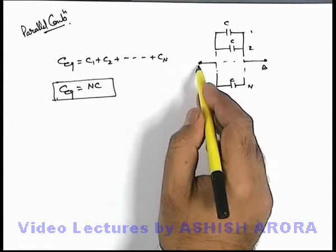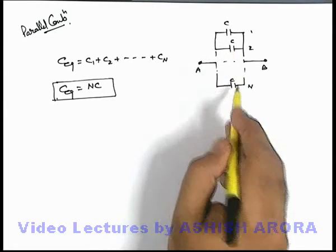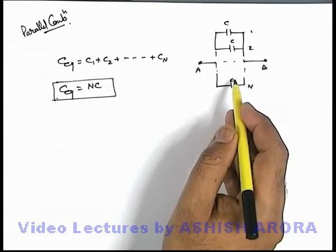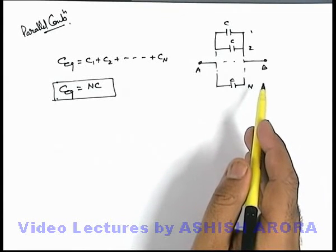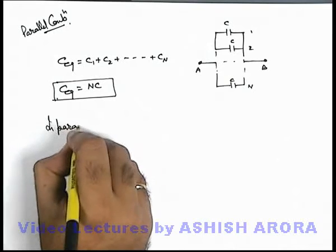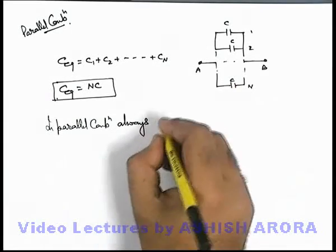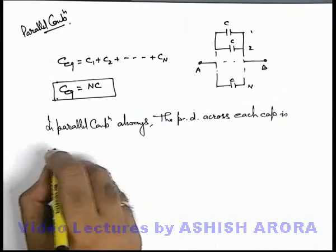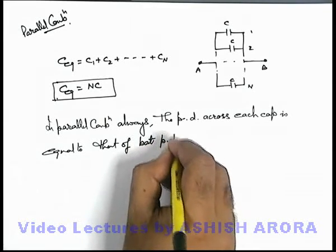In this situation, if we connect a battery of potential difference V across the combination, all capacitors will receive equal charges — each equal to CV. So the total charge on the combination will be nCV. Always remember that in series combination the potential difference is divided among all identical capacitors, so across each capacitor the potential difference is V by n. Whereas in parallel combination — always, even if the capacitors are not identical — the potential difference across each capacitor is equal to that of the battery connected across the combination.